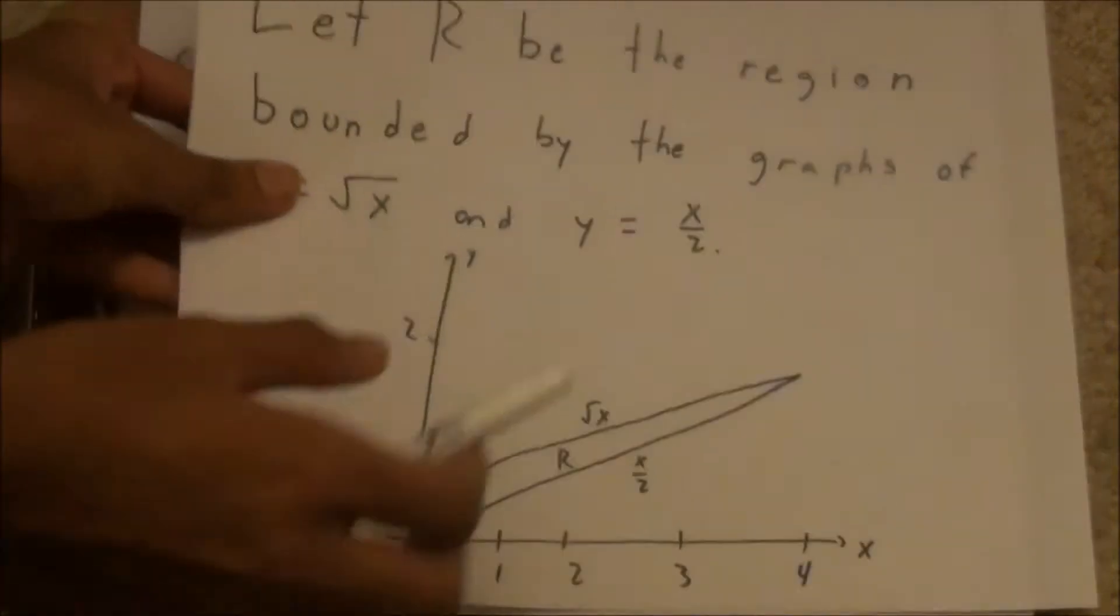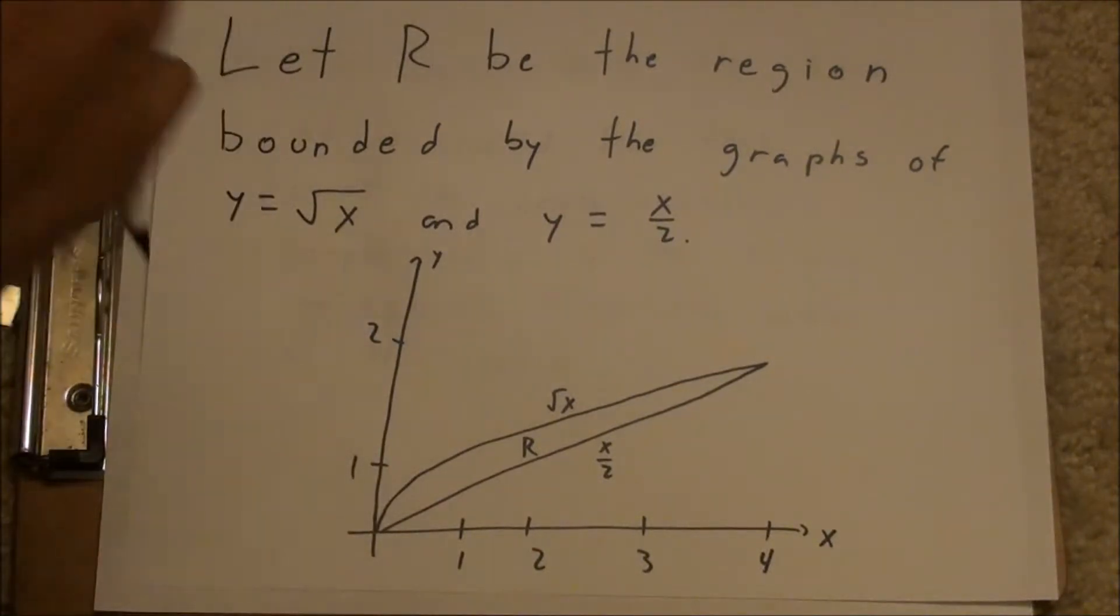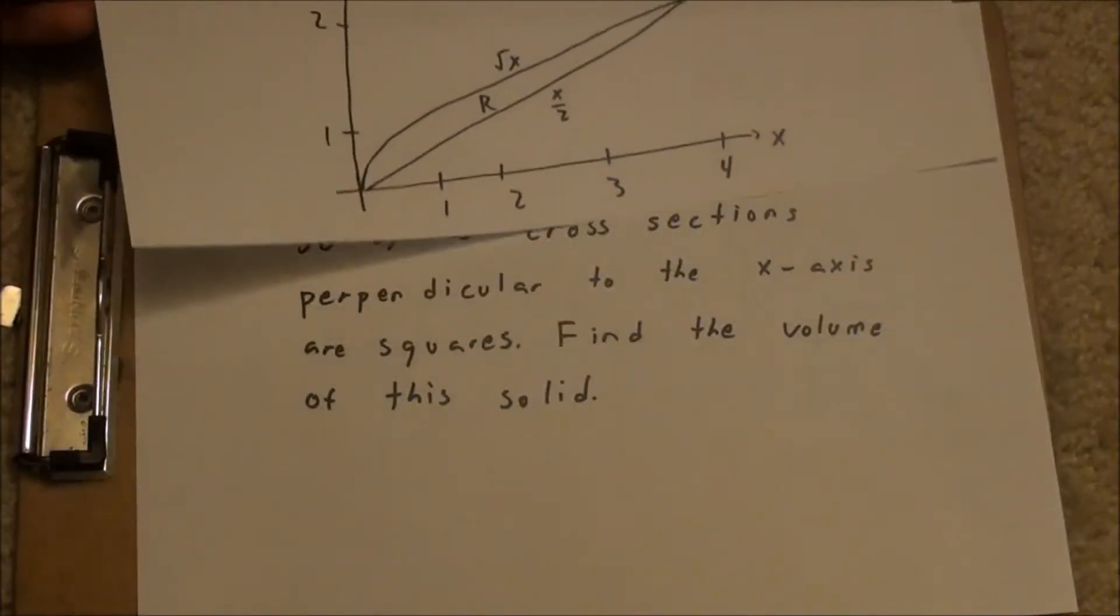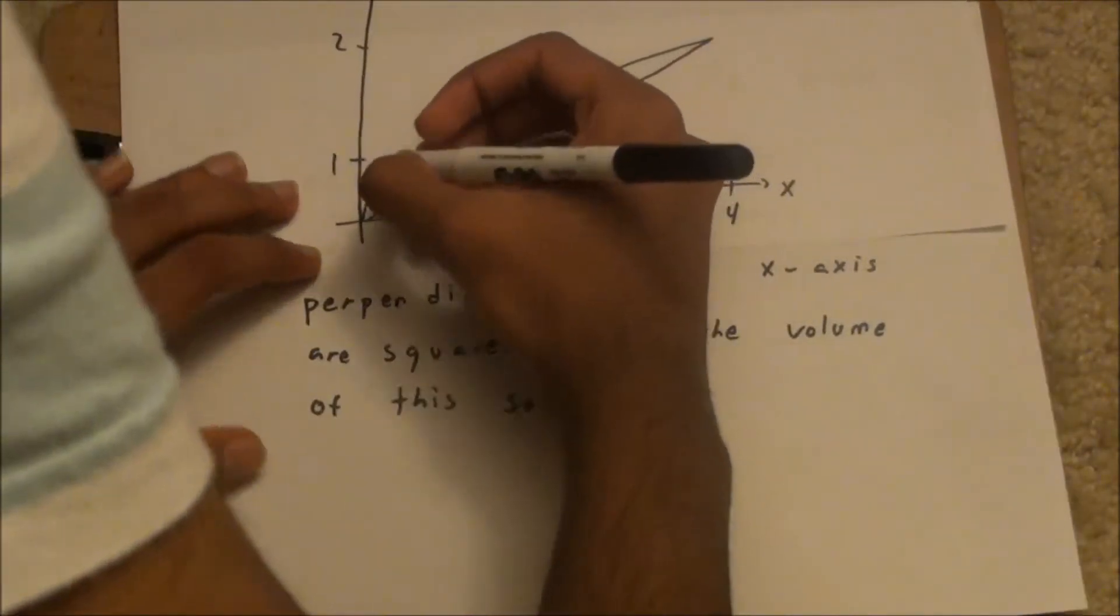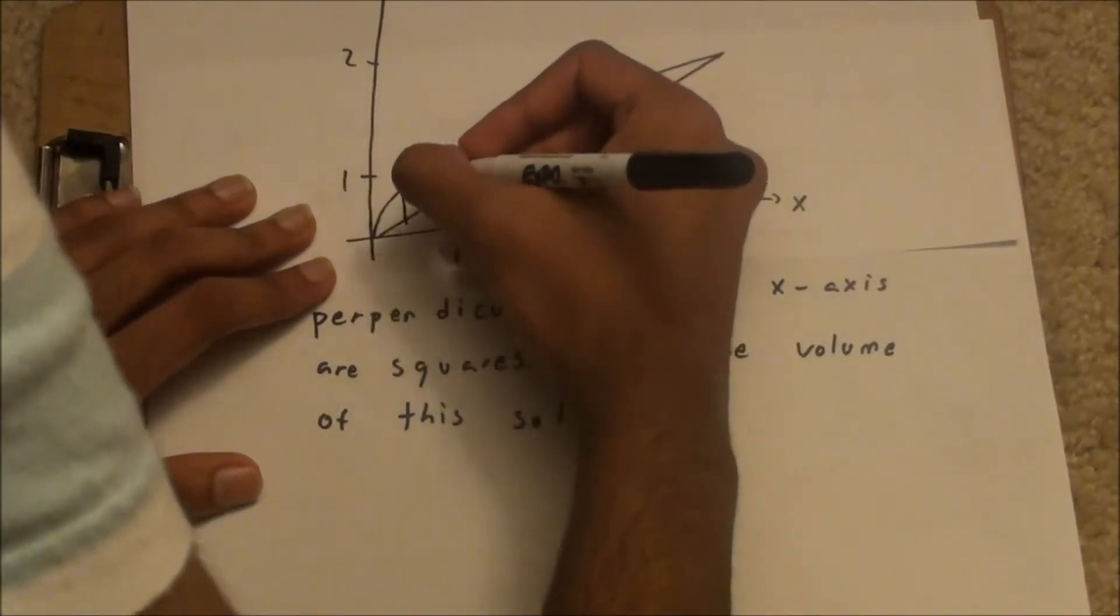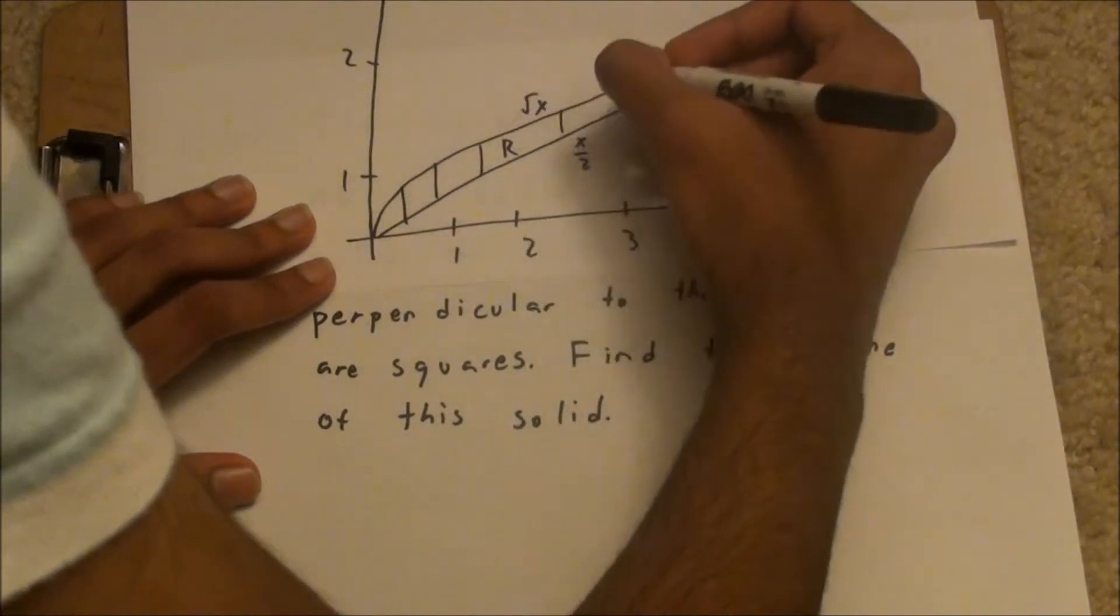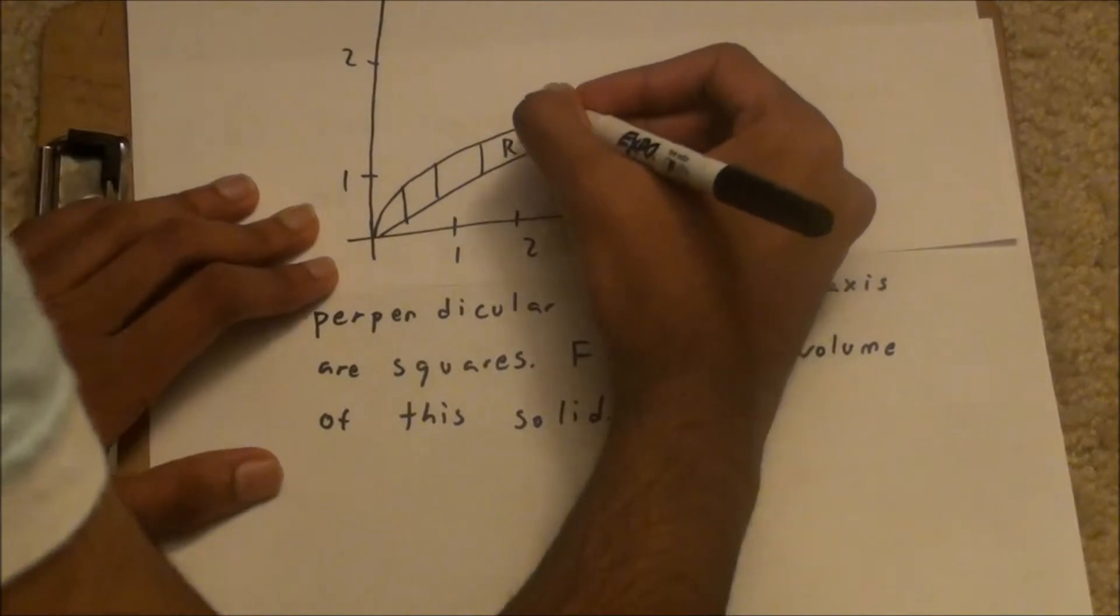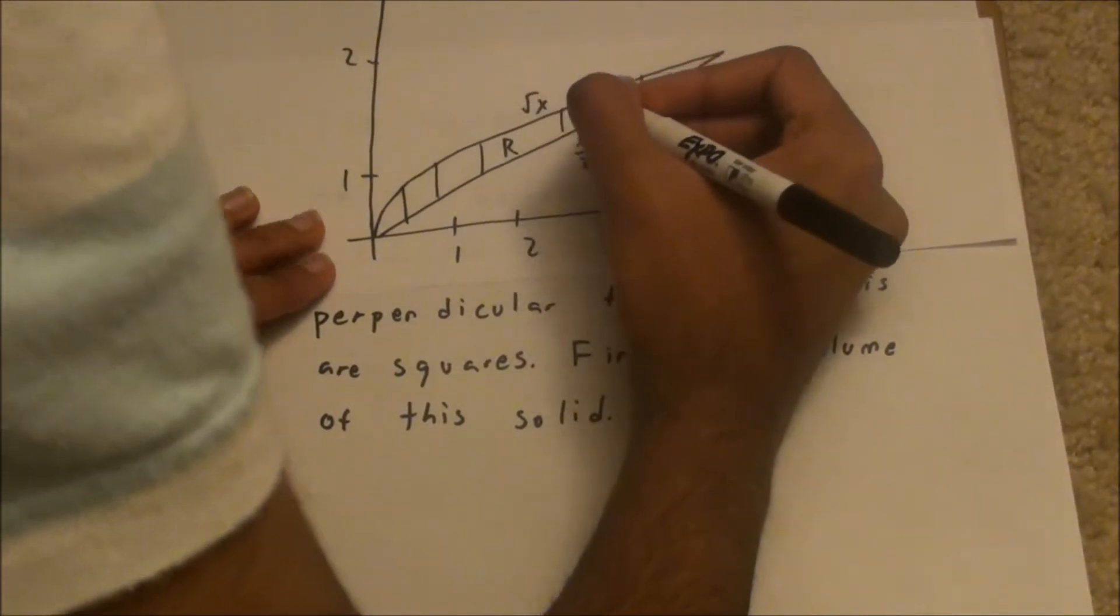So if you go back to our graph, it's perpendicular to the x-axis, those are just vertical lines, basically. And the distance between two lines is their difference, which should be the square root of x minus x over 2.